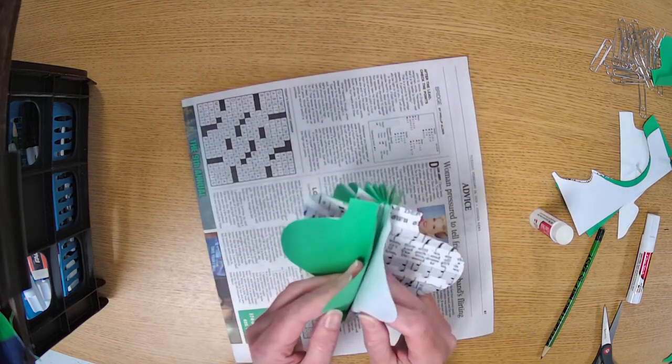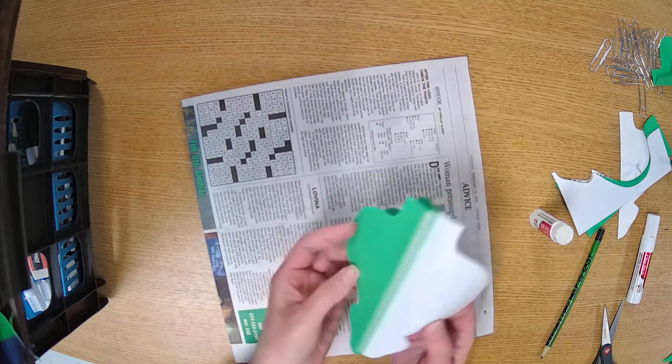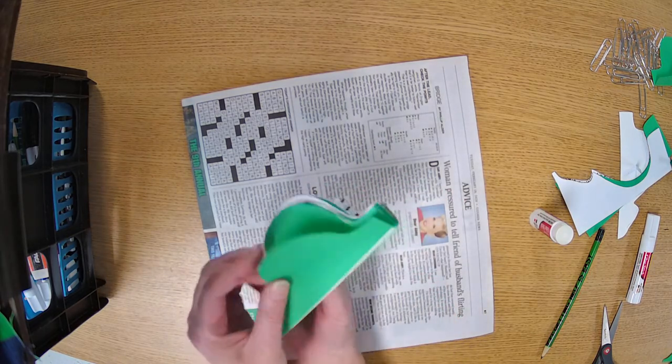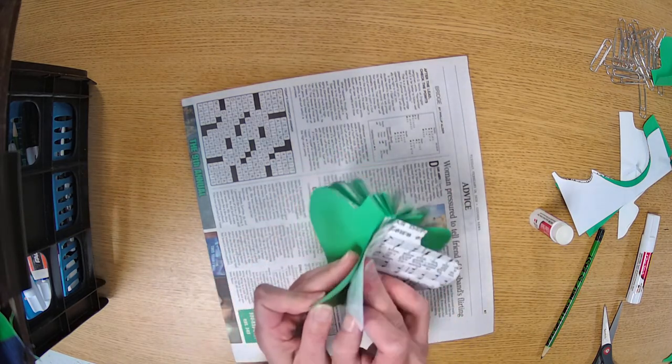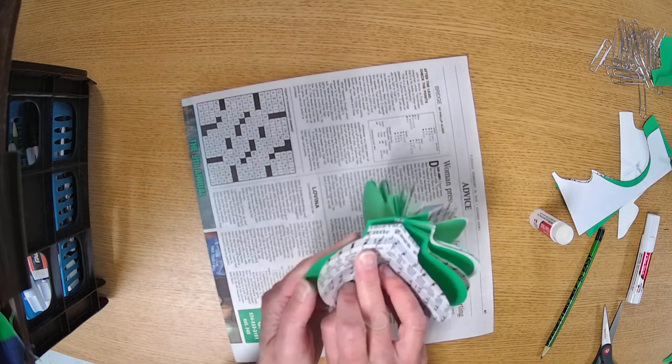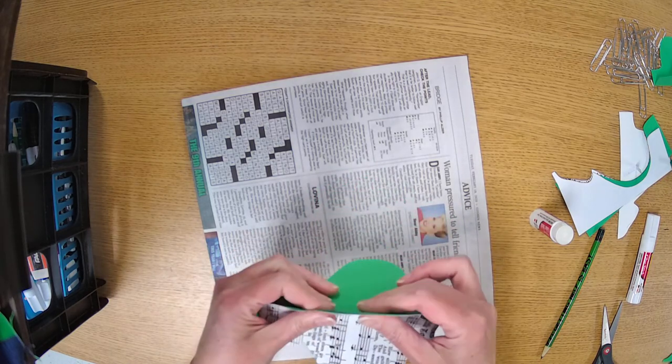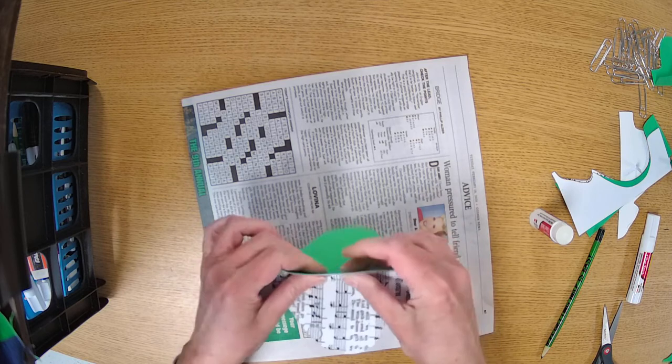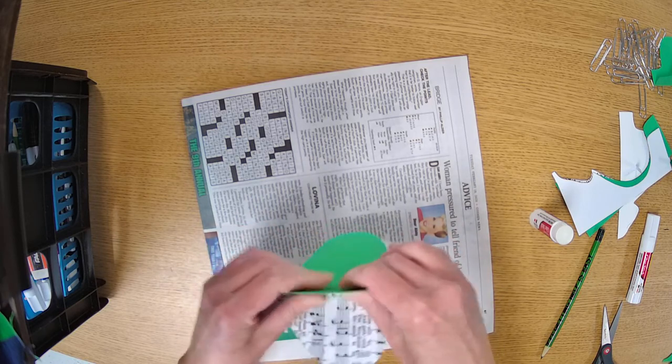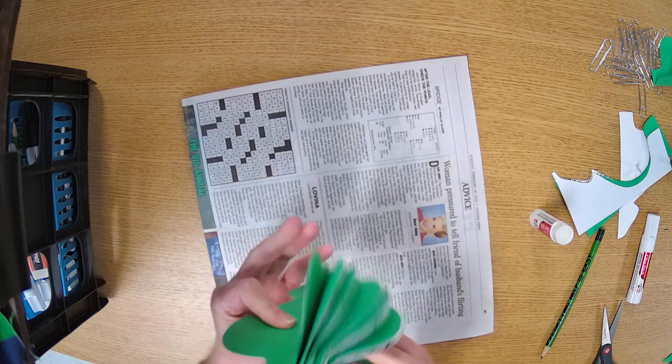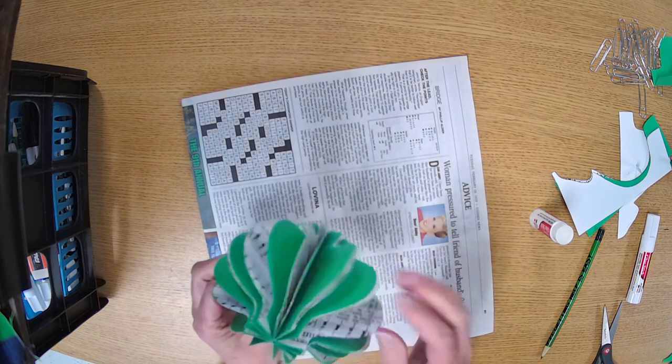Pull it around and glue it to the bottom one. So you see this is the top, this is the bottom. I'm pulling this around and I have to maneuver it a little bit to try to line it up. I glue that together and I have something that looks like this.